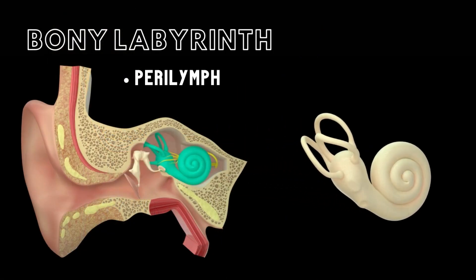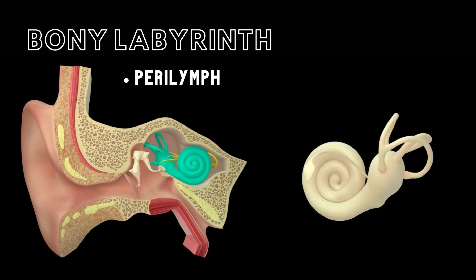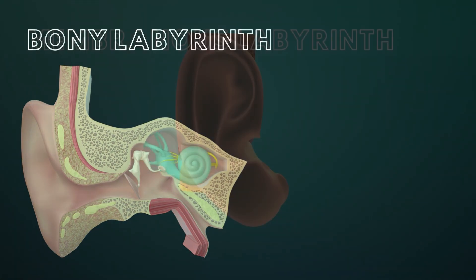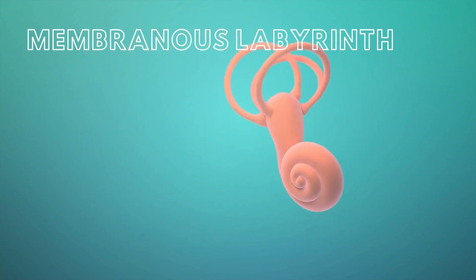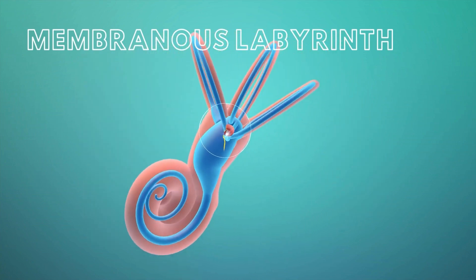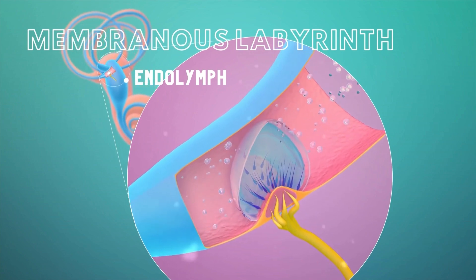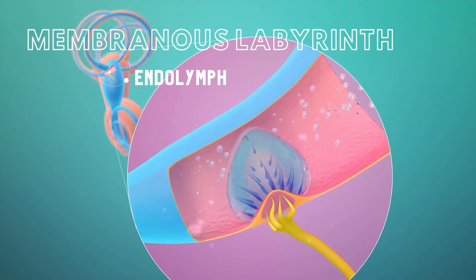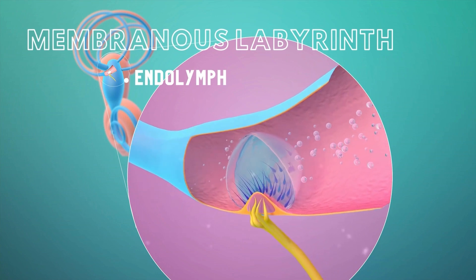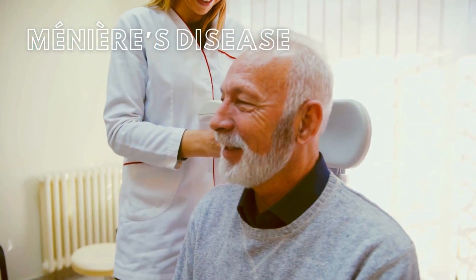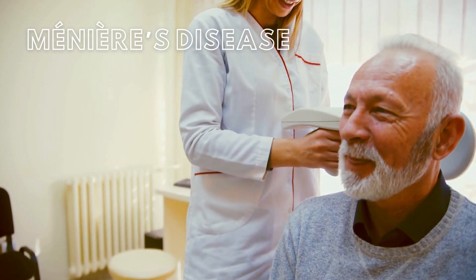The bony labyrinth is lined by a serous membrane that secretes a fluid termed perilymph. Inside the bony labyrinth is a membrane-lined canal called the membranous labyrinth that contains a fluid called endolymph. Although a definitive cause of Meniere's disease is unknown, an increase in endolymph and/or perilymph volume within the inner ear may be the cause.